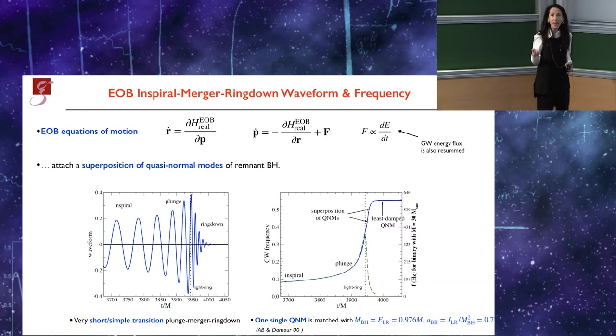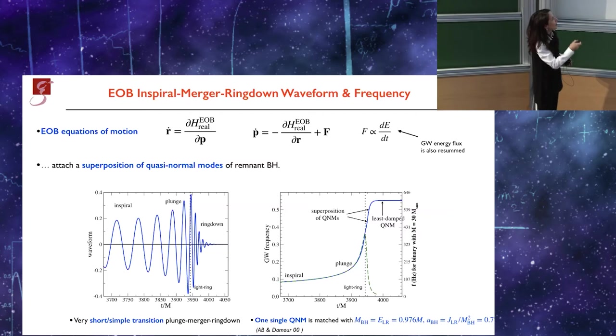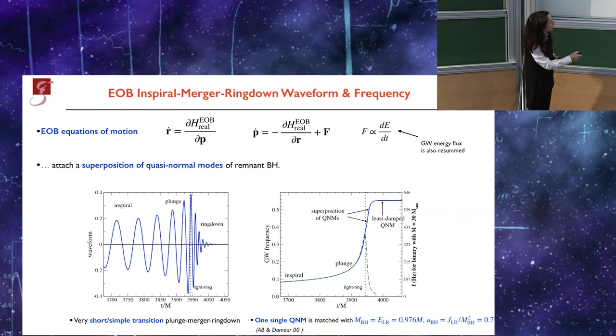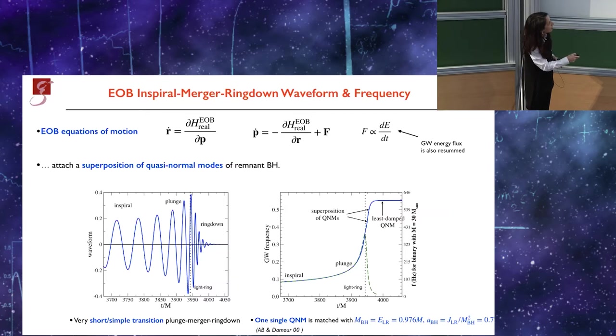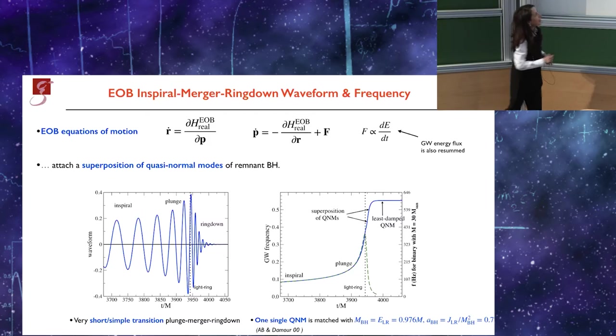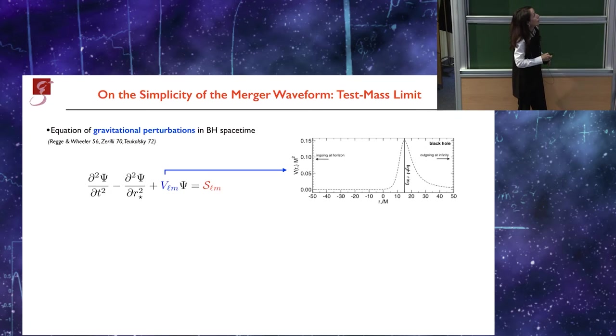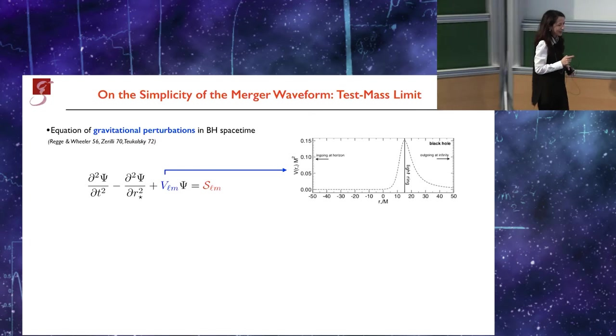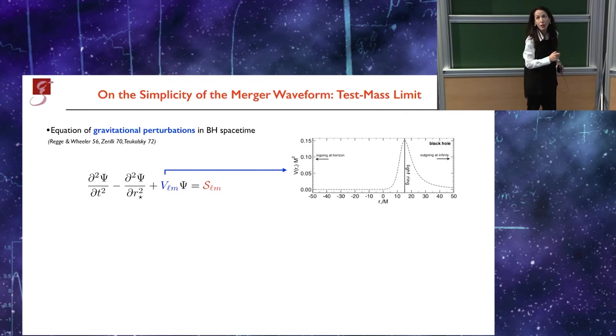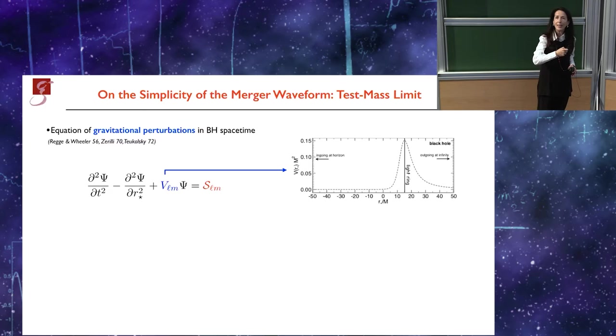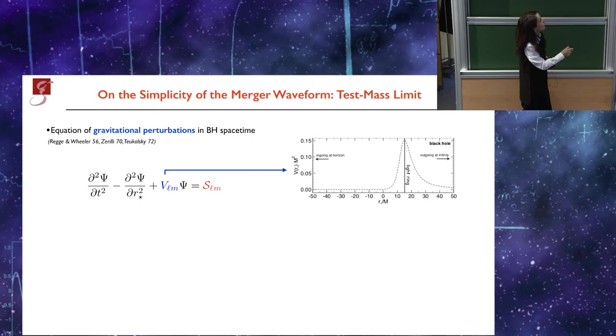Of course, at the time there was no numerical relativity, so we didn't know, given the masses of the inspiral, what would be the final mass and the final spin of the black hole. So we guessed: we took the energy at the light ring and the angular momentum at the light ring and we computed basically the mass and the spin. Actually this value is 10% off of what numerical relativity predicted a few years later. I want to emphasize again the simplicity of the merger waveform, going back to the test mass limit, because I think this was very crucial to then build this model, extend it to spin, and use results from numerical relativity later on.